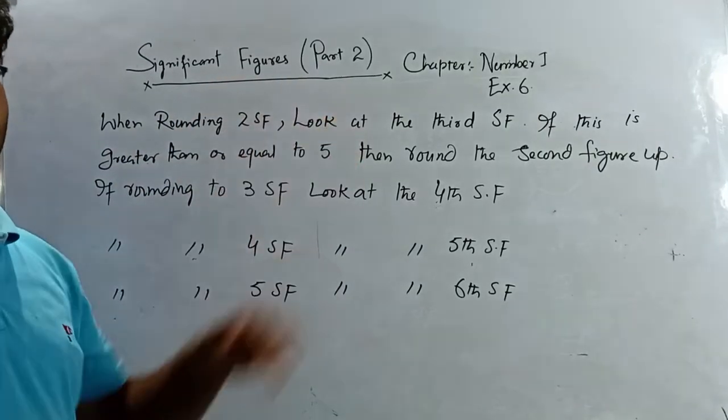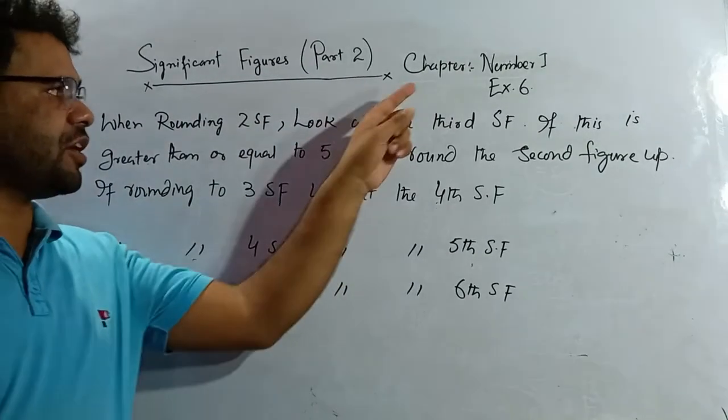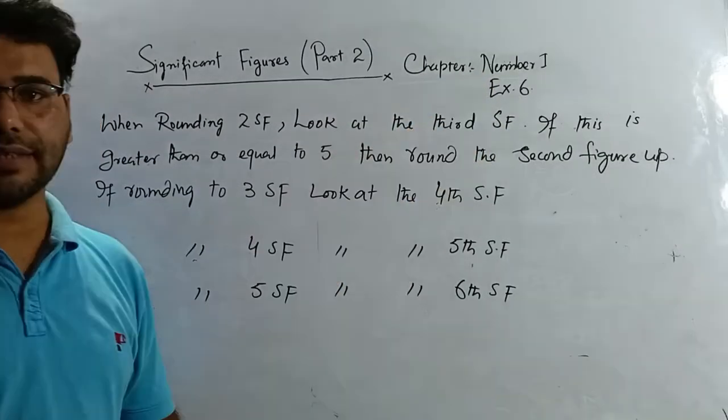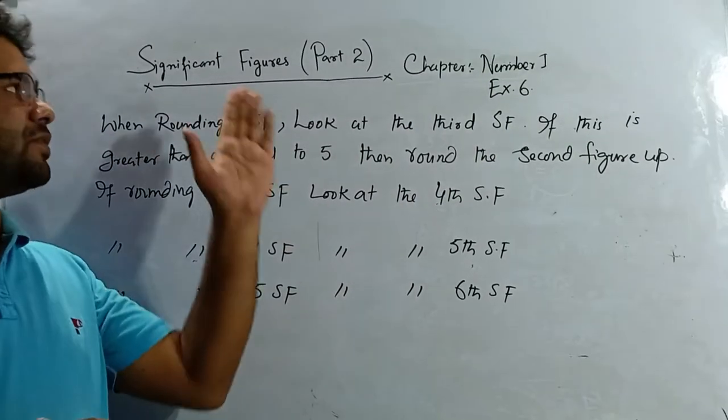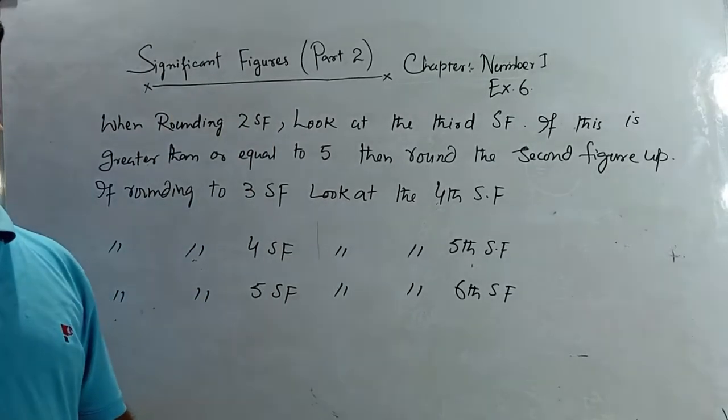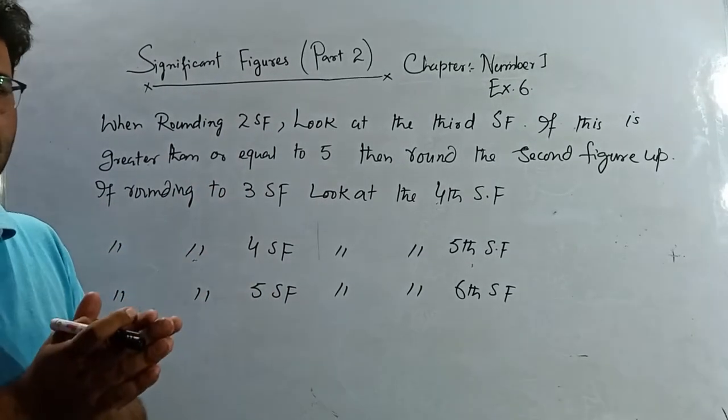You can see chapter 1, number 1 — there you have exercise 6 and 6 star, which is based on significant figures and decimal places. So let's start doing exercise 6. I hope you will all take out your textbooks and open exercise 6, significant figures part 2, in chapter 1.